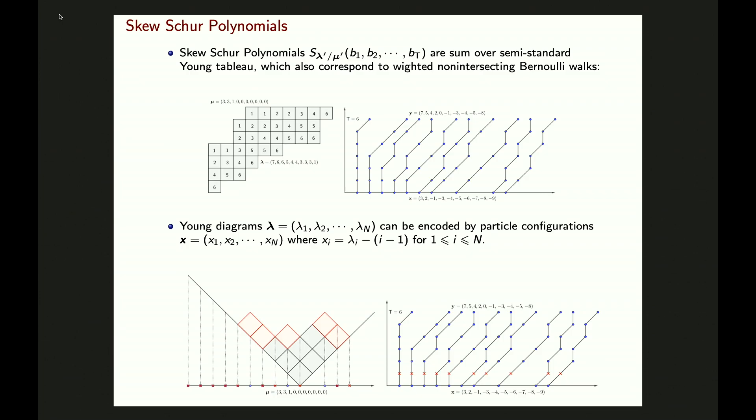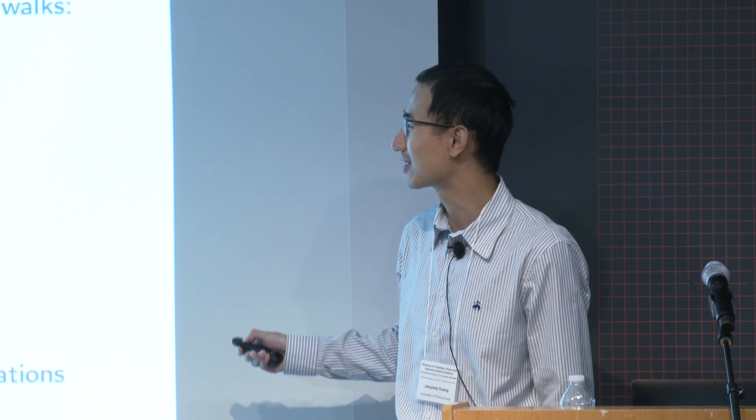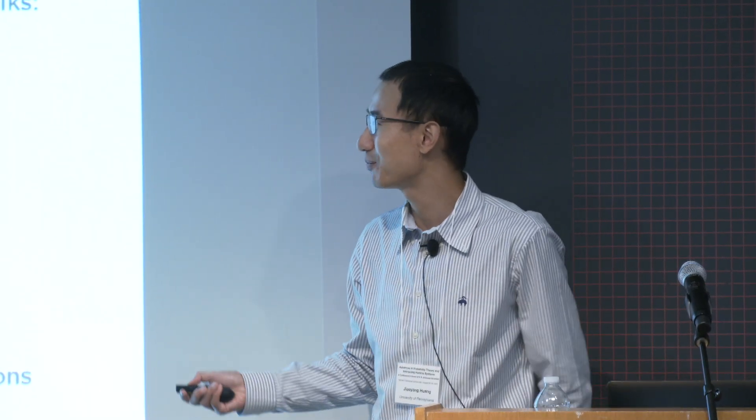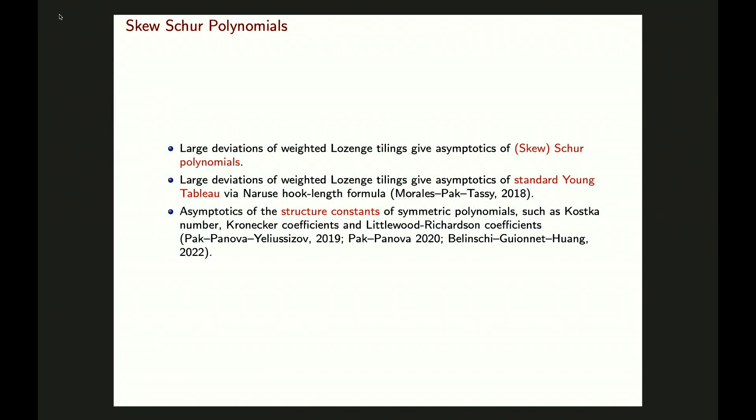The large deviation for lozenge tiling also gives the large deviation for those Berlouli random walks, which correspond to lozenge tiling on a strip. So the large deviation for lozenge tiling gives the asymptotics of Schur polynomials. If you are interested in standard Young tableaux, where numbers are strictly increasing along columns and rows, one can also prove a large deviation — that was done by Morales-Pak-Tassy. People are also interested in the Littlewood-Richardson coefficients, and using asymptotics of Schur polynomials we can prove asymptotic upper and lower bounds for those structure constants.